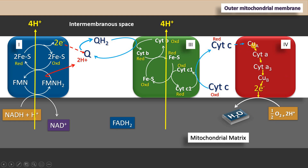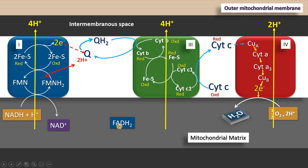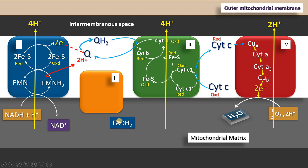Even in complex IV, when electrons are transferred from one component to another, there is release of energy. This energy pushes two protons from the mitochondrial matrix to the intermembranous space. We also have FADH2, a reducing equivalent coming from glycolysis in the cytoplasm and also generated in the TCA cycle. This FADH2 hands over its high-energy electrons to another complex of the electron transport chain — a peripheral protein called complex II. Remember in the TCA cycle, succinate is converted to fumarate, generating FADH2, so this complex II is directly linked to the TCA cycle.